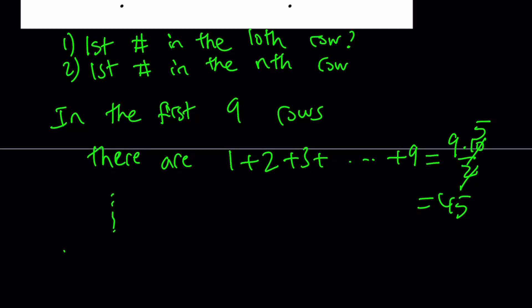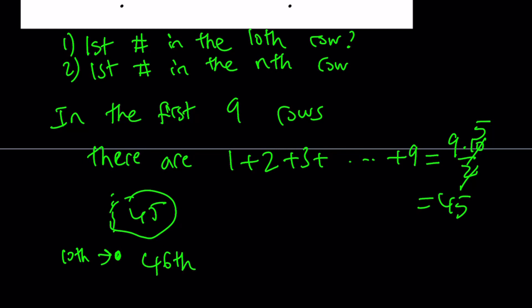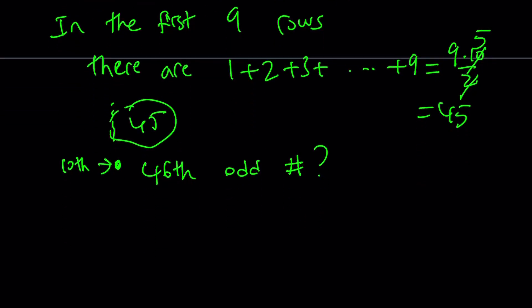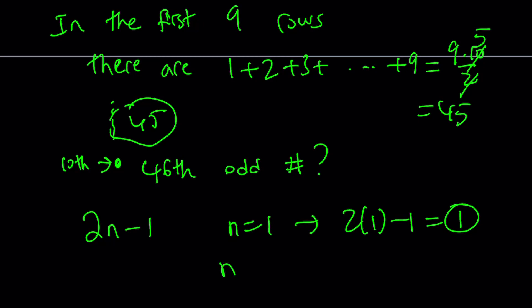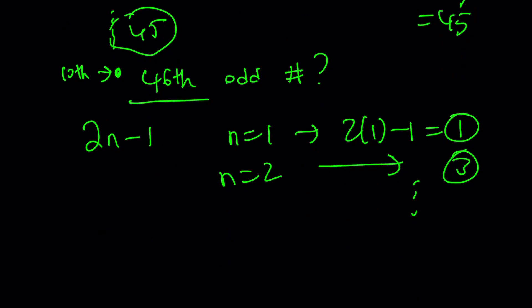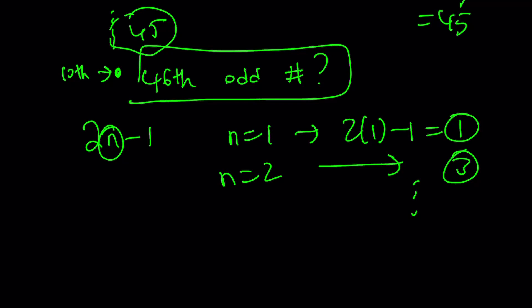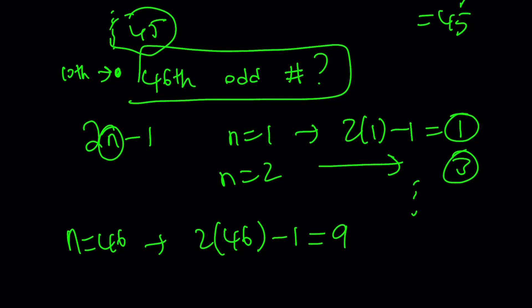What is that supposed to mean? We have nine rows, and the tenth row comes next. Since there are 45 numbers in the first nine rows, the first number in the tenth row is going to be the 46th odd number. So the question is: what is the 46th odd number? The formula for the nth odd number is 2n minus 1. If n equals 1, you get 1; if n equals 2, you get 3 — the second odd number — and so on. So to find the 46th odd number, we replace n with 46: 2 times 46 minus 1 equals 92 minus 1, which is 91.